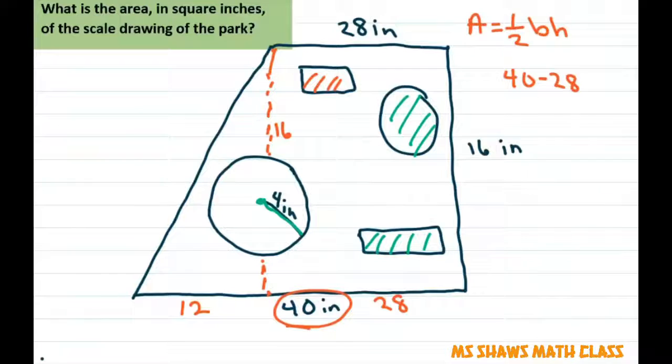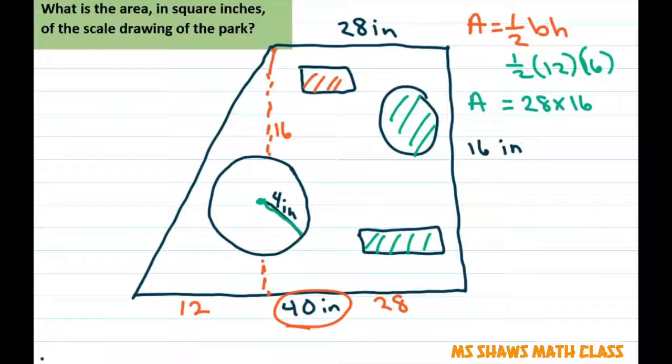So that's going to be one half base is 12, height is 16. And then we're going to add that to the area of the rectangle, which is 28 times 16. So when you multiply this out, the area of the park is one half of 12 is six, and six times 16 is 96 plus the rectangle. It's 28 times 16, which is 448. And you add this together and you get 544. And that's going to be inches squared. We don't have to convert. Thank goodness.